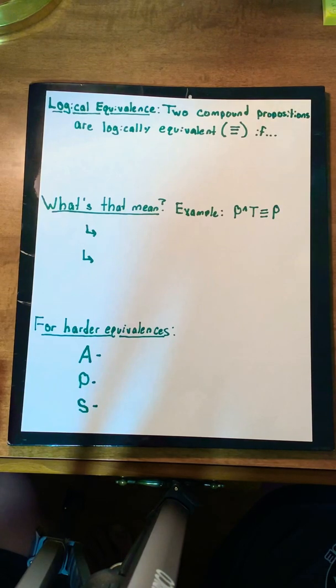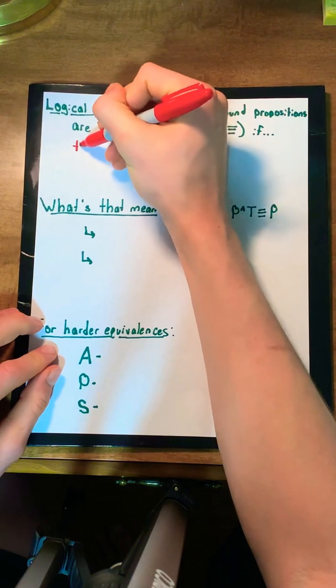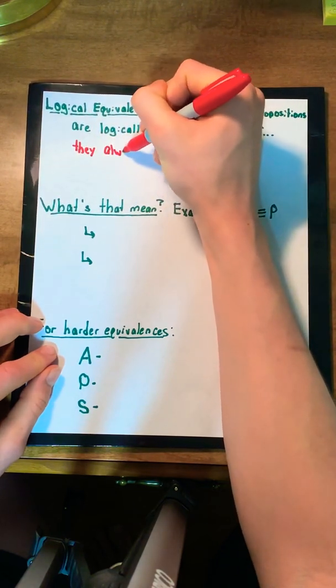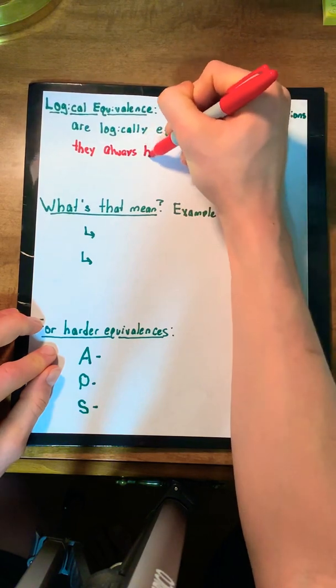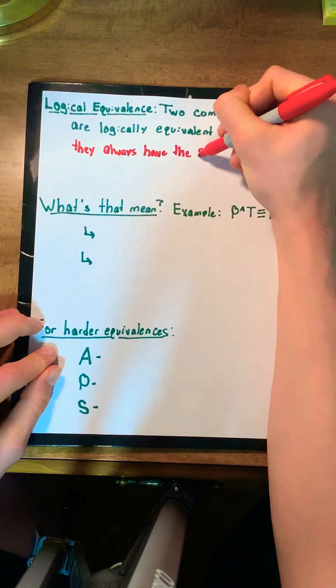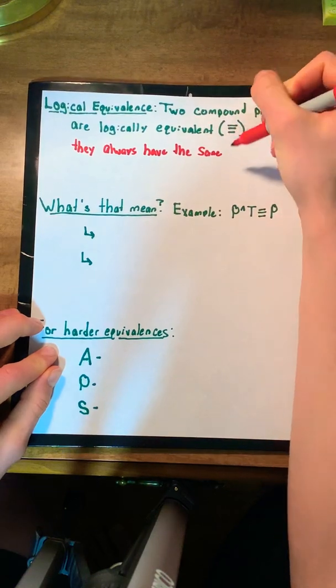Two compound propositions are logically equivalent if they always have the same truth value.